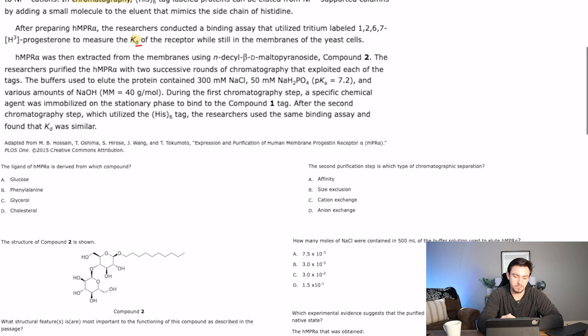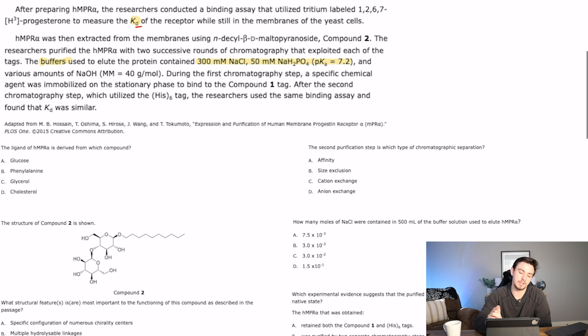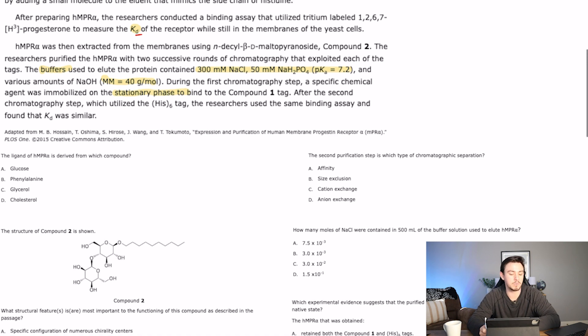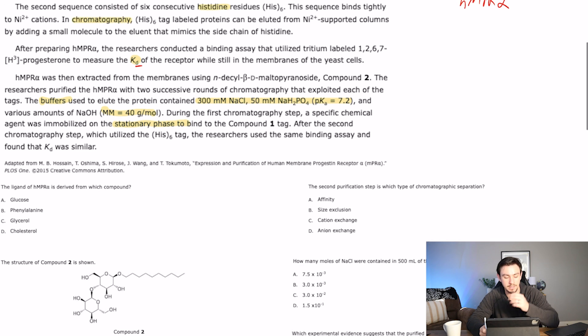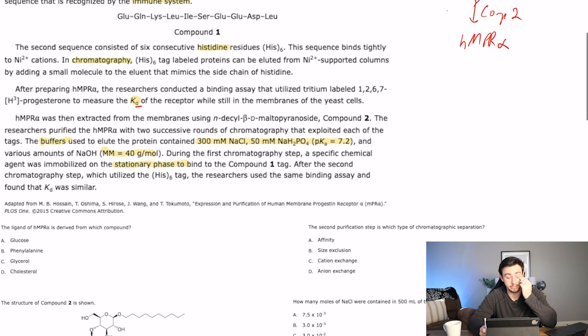The buffers, so buffer, that's a basic science, used to elute the protein, contained 300 millimolar sodium chloride, 500 of a salt for whatever this acid is, and then pK is 7.2. Okay, so this is kind of looking like we might have to do some Henderson-Hasselbalch. We'll keep that in mind. And various amounts of sodium hydroxide with our molecular mass of that. During the first chromatography step, a specific chemical agent was immobilized on the stationary phase to bind to the compound 1 tag.